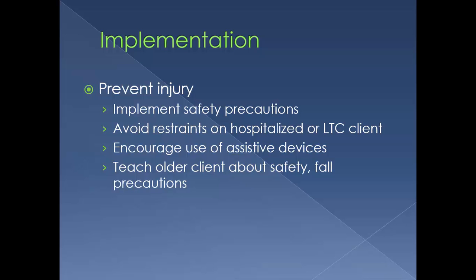For implementation, in preventing injury, safety precautions should be implemented. Avoid restraints on hospitalized or long-term care clients if possible because that could increase their risk of falling. Safety precautions include keeping the bed in the lowest position, using side rails as needed, and nighttime lighting to the toilet — most falls are preventable. Encourage use of assistive devices to maintain independence. Teach older clients about safety and fall precautions, assessing the home for safety issues including throw rugs and electrical wiring in pathways.